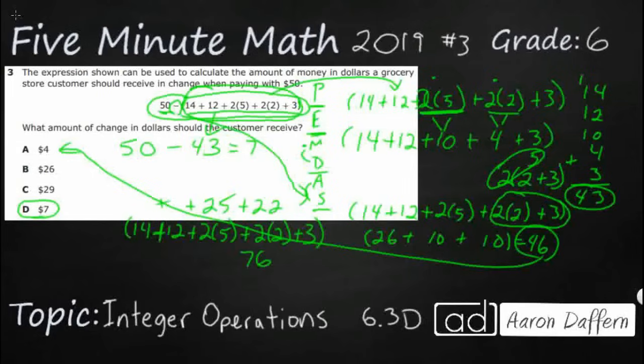Now, you can't subtract 76 from 50, but you can take 50 from 76, and you would get 26, which is our B.